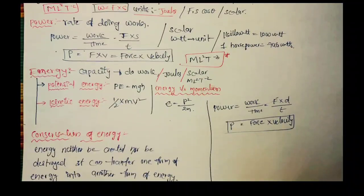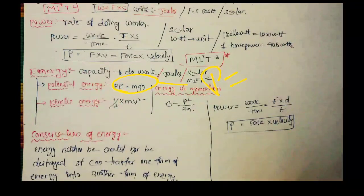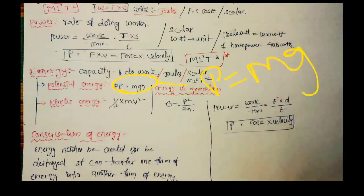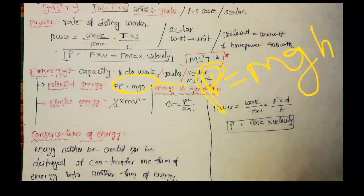Potential energy equals mgh. This potential energy is based on the mass and the height of the object.